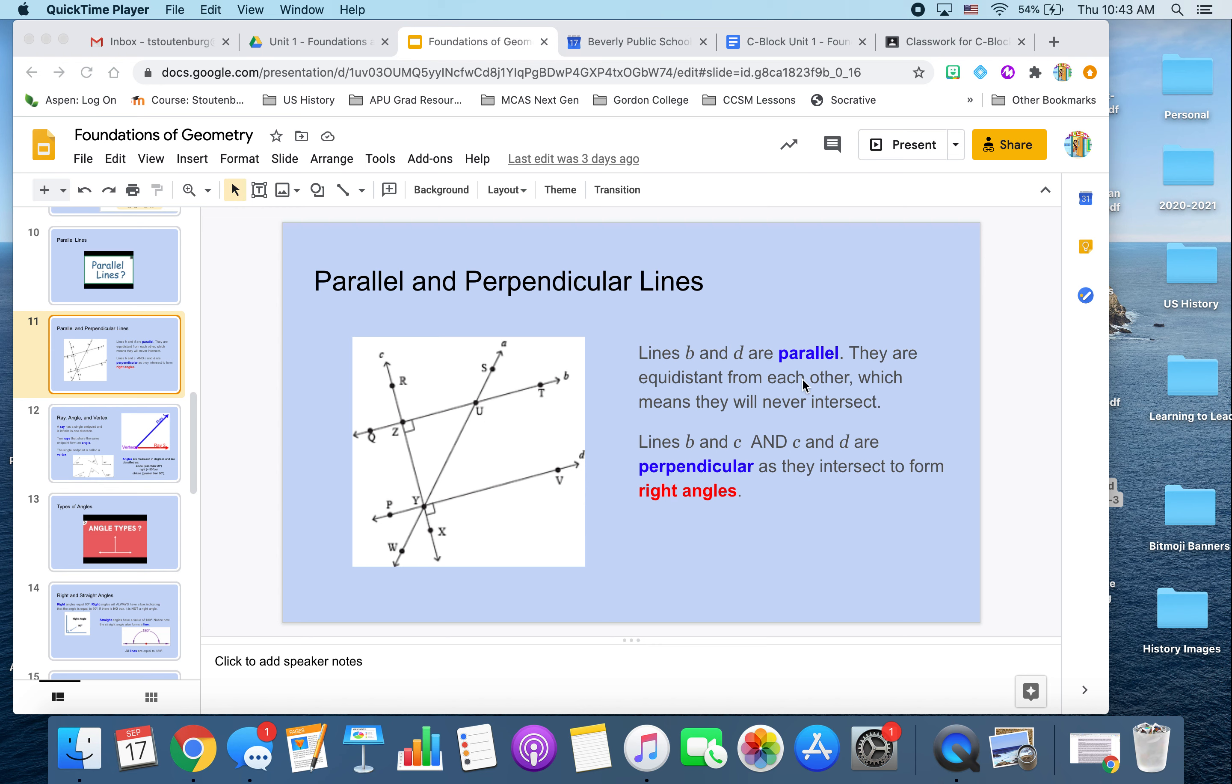Parallel lines are lines that are equidistant, which means they're the same distance from one another, and they will never intersect. You notice how line B and line D, these two are parallel. They're the same distance from one another no matter where on the line you go. And because they are the same distance from one another, they'll never touch. That makes them parallel.